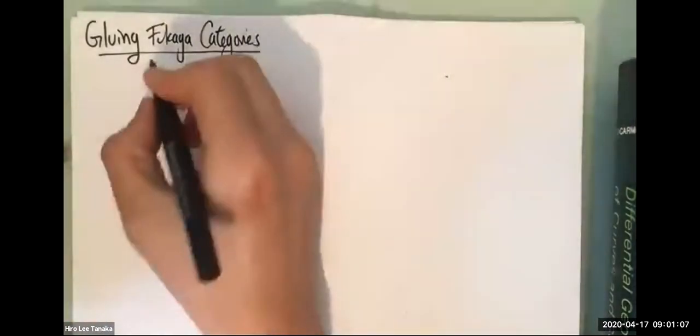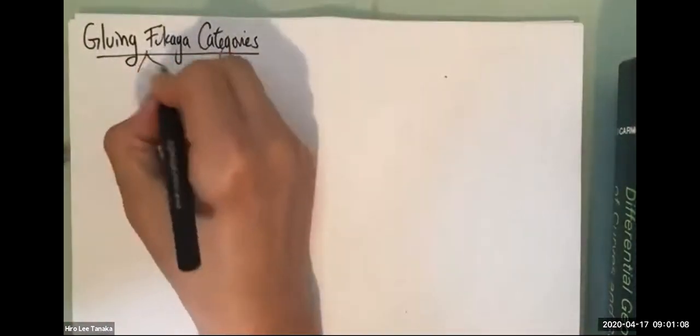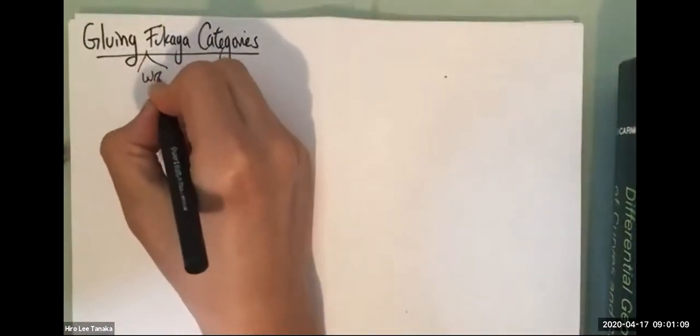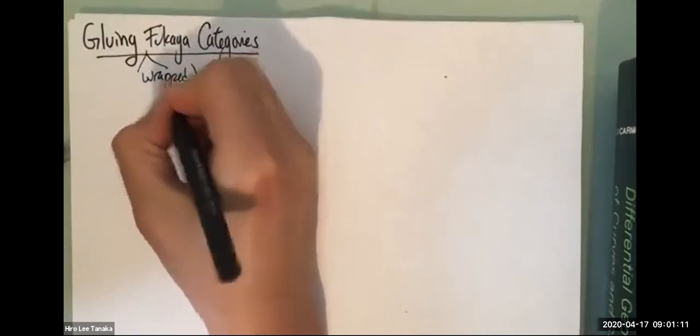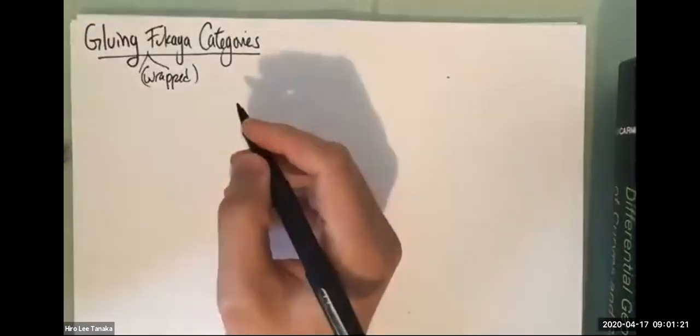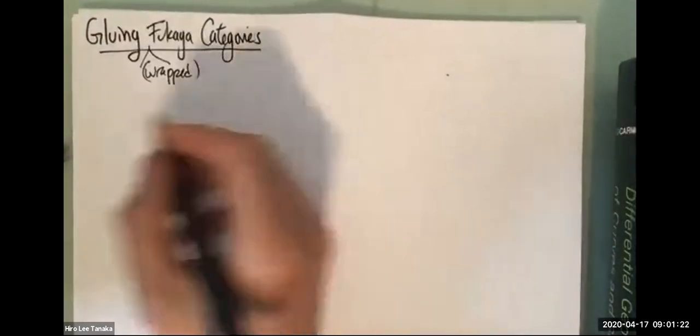Today I want to talk about gluing Fukaya categories, and everything is going to be in the wrapped setting. Sorry to disappoint if your interest is in monotone or compact things. Let me begin with a little bit of background.